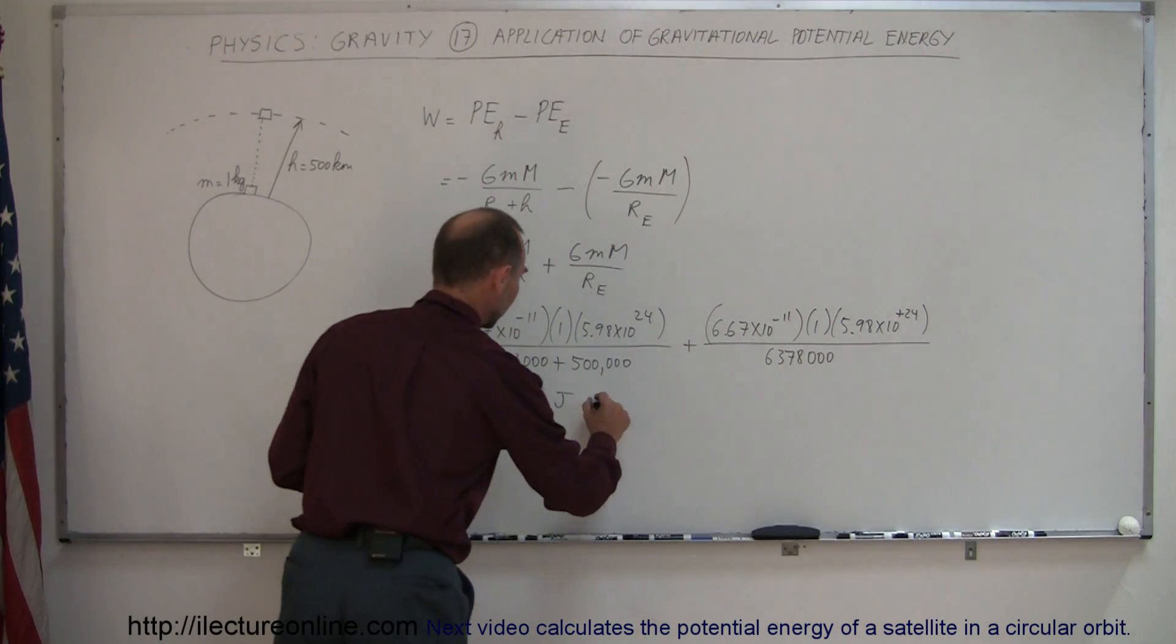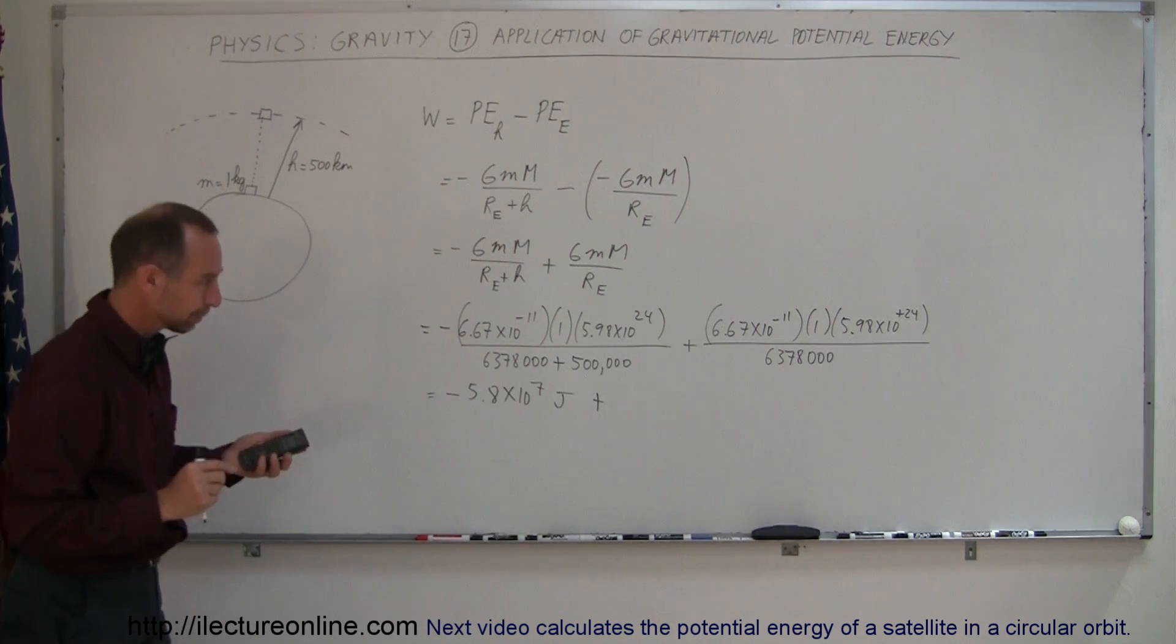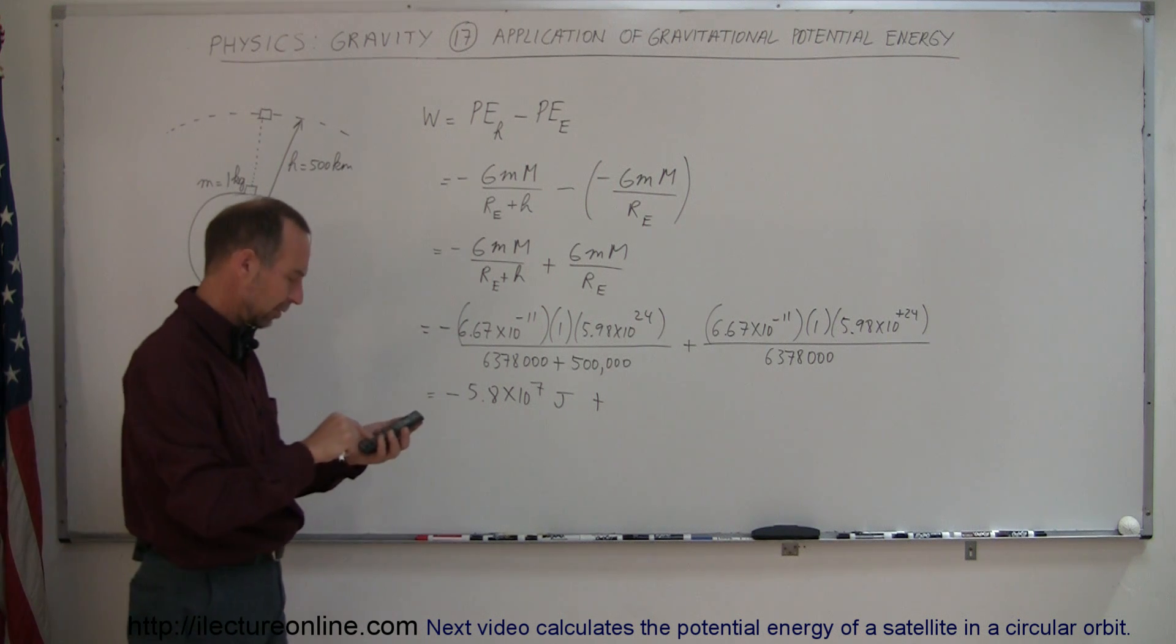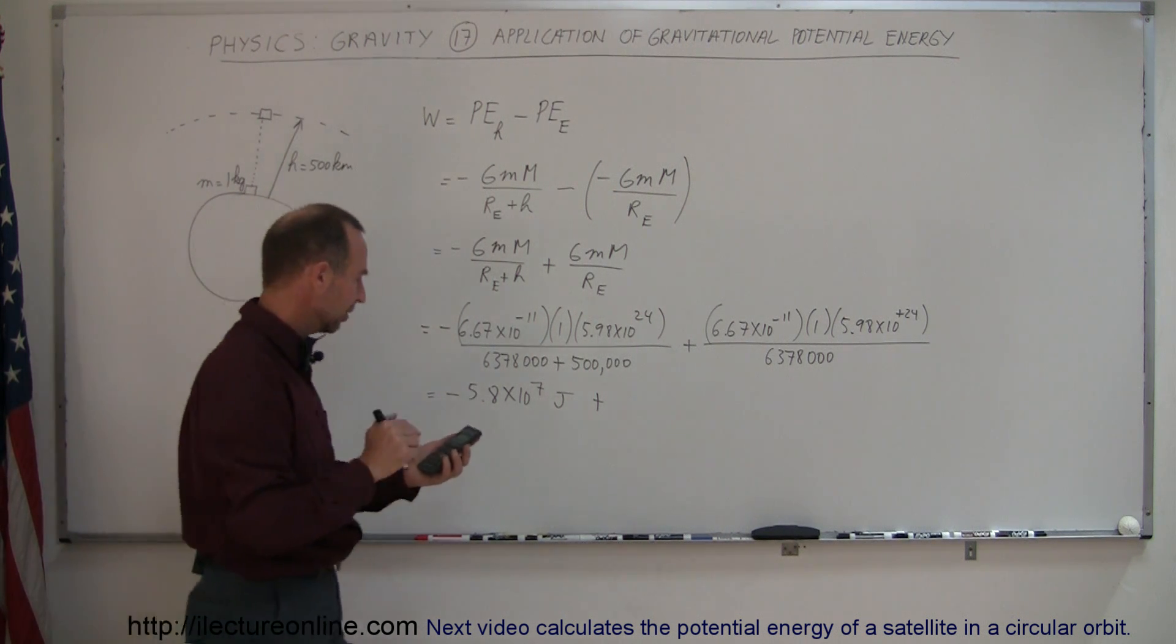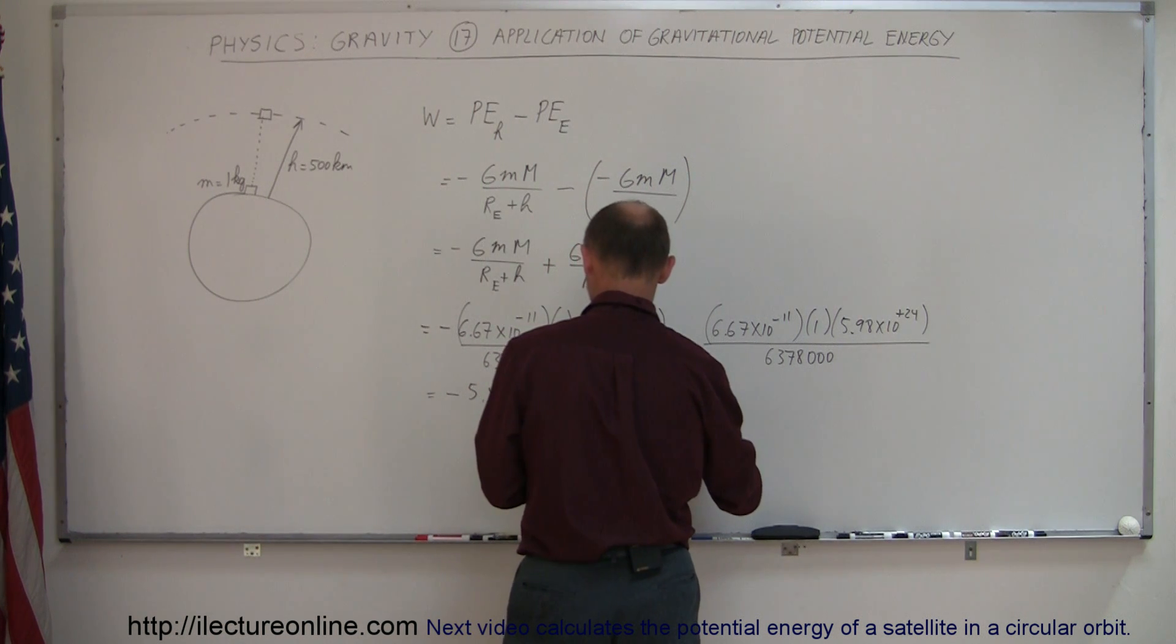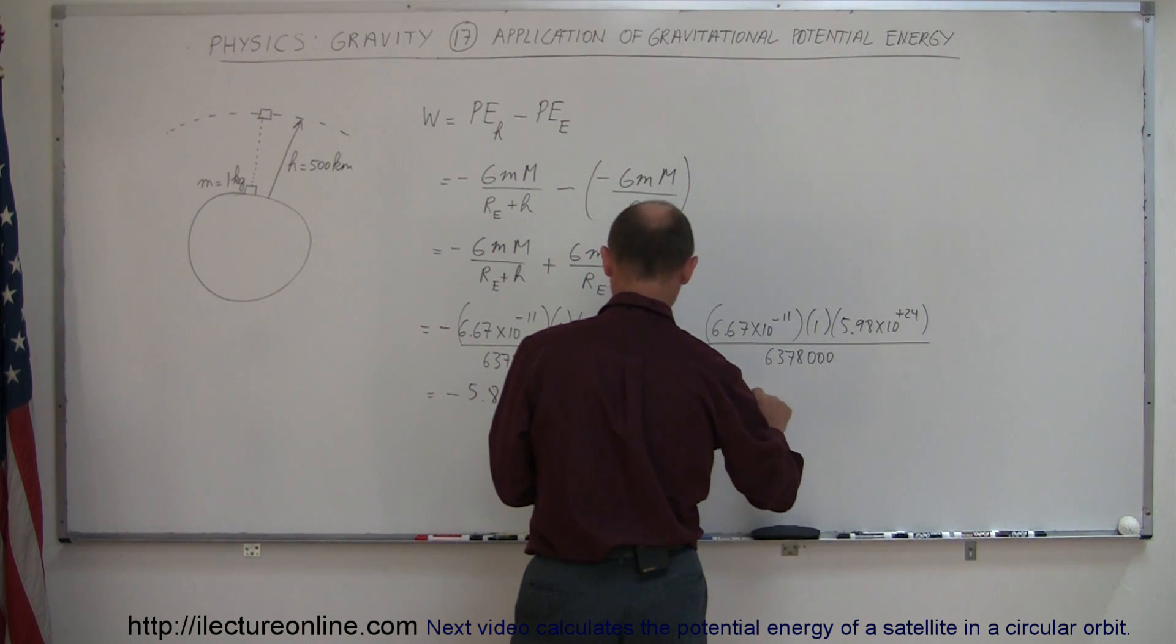And then we add to that plus that quantity right there, 6.67e-11 times 5.98e24 divided by 6,378,000 equals, and converting it to scientific notation, so that would be plus 6.25 times 10 to the 7th joules.